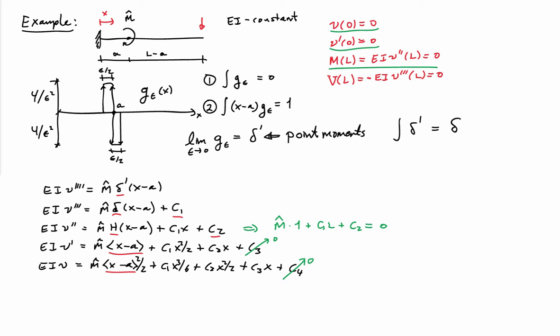Maybe we can get another expression that will allow us to solve for the constants. If I use the shear condition, I see that C1 is going to equal 0. When I evaluate delta of L minus A, that's 0 because delta is localized to A. So I get C1 equals 0. Knowing what C1 is, I can plug that into the expression I got for the moment at L equals 0, and that tells me that C2 equals minus m hat. So now I know what all my constants are. Three of them are 0, and one of them is minus m hat.